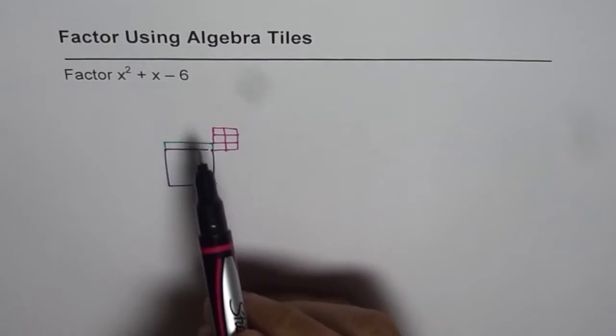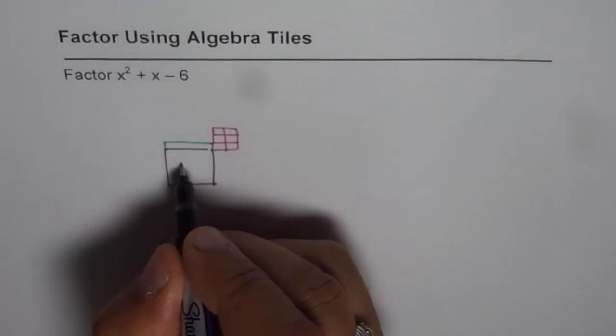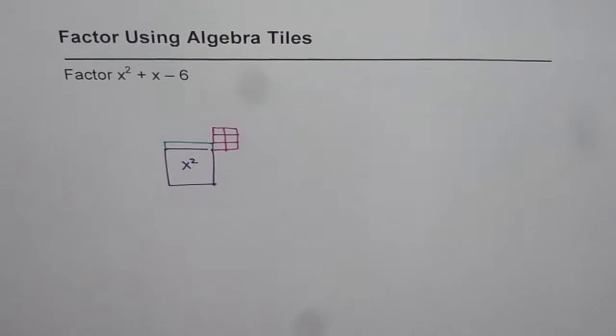Normally you have to put 6 tiles diagonal to the x squared tile when you are factoring. That is the strategy. Now we have to complete a rectangle. By placing these tiles we are unable to complete a rectangle. To factor we need to complete a rectangle.